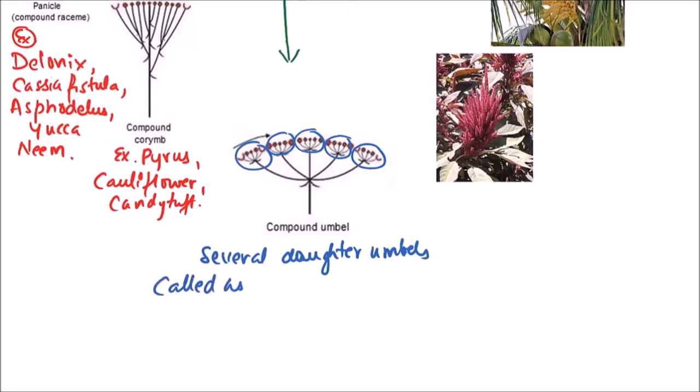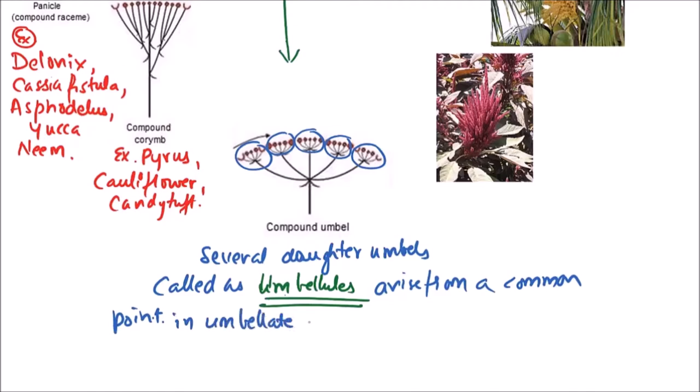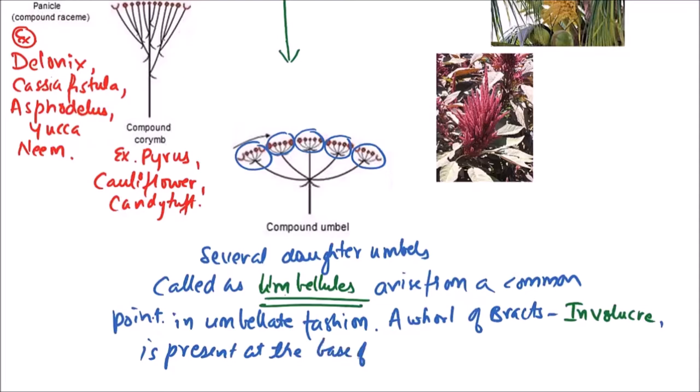Several daughter umbels, which are termed as umbellules, arise from a common point in umbellate fashion. A whorl of bracts, which is termed as involucre, is present at the base of parent umbel.